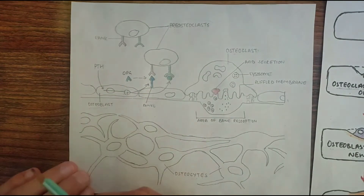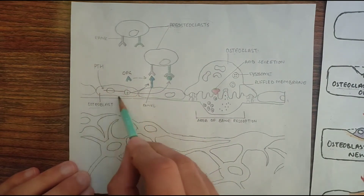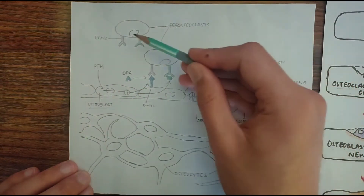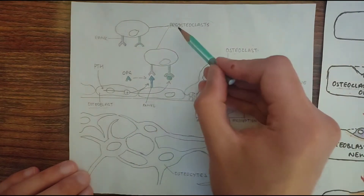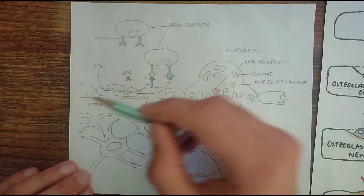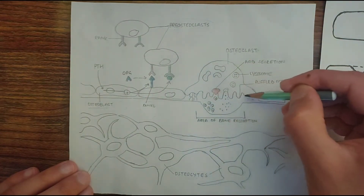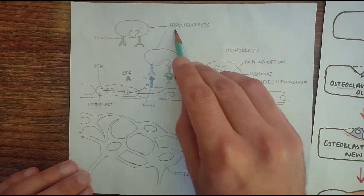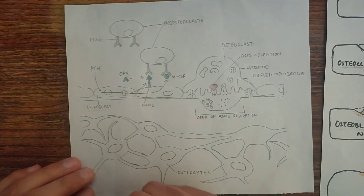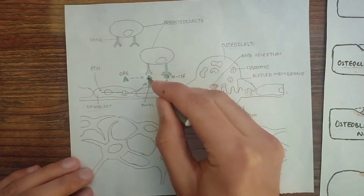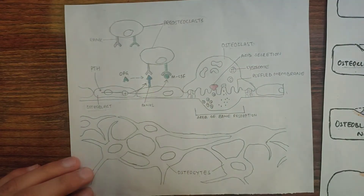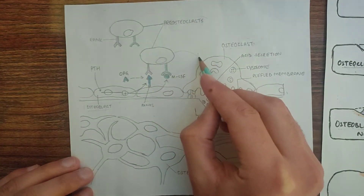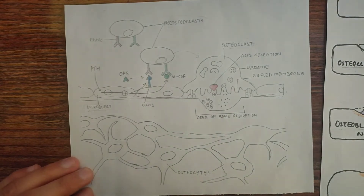So parathyroid hormone will bind to the osteoblast cell, because osteoblast cells have got parathyroid hormone receptors. Now as parathyroid hormone binds to the receptors present on the osteoblast cell, the osteoblast cell will send a signal to the pre-osteoclast cells. The pre-osteoclast cell is the immature osteoclast, while the other cell is the mature osteoclast. This signaling is because of two proteins, and without these two proteins, the transformation of pre-osteoclast into mature osteoclast is not possible.